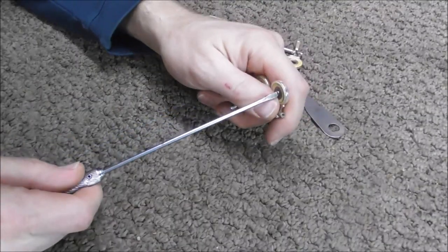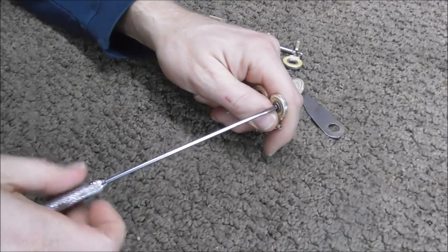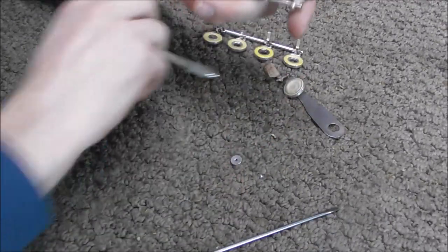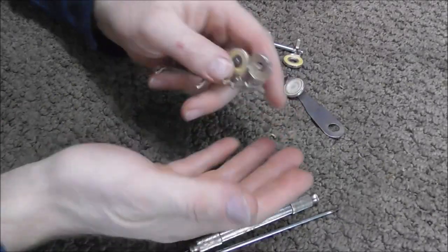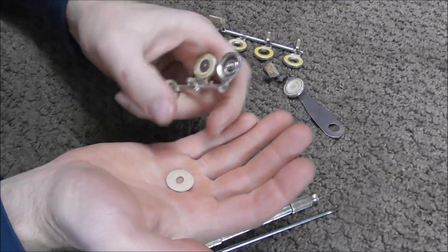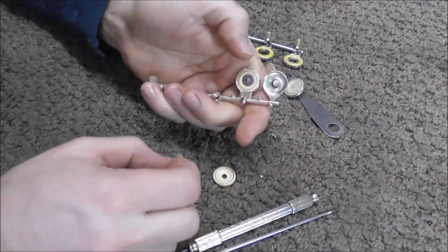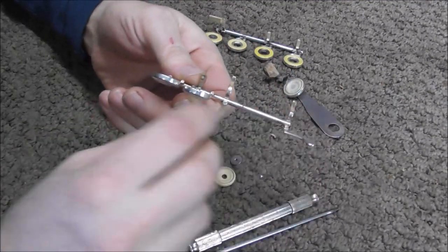For this system, you take the screw out and then the washer comes out too. Then you can pull out the pad. And often underneath the pads you'll find shims, the paper shims. And what these do is they make sure that the pad comes up the right height.